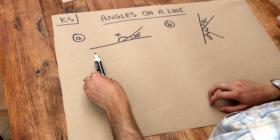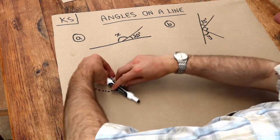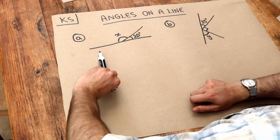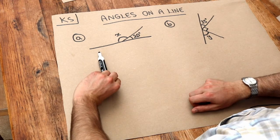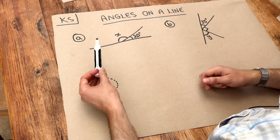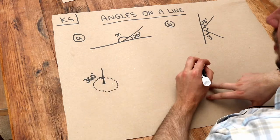So if my pen was here and it span a full spin to get back to where it started, the total turn, which is what an angle is, the total turn is 360 degrees.